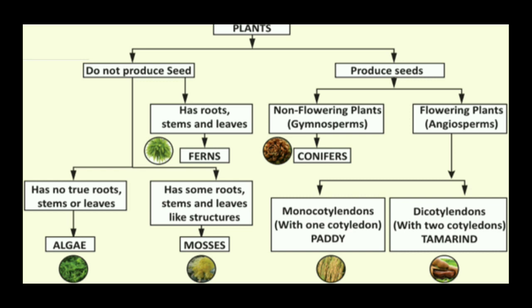The plants which produce seeds are classified into two groups: gymnosperms and angiosperms. Gymnosperms are plants which produce naked seeds and do not produce flowers. Angiosperms are flowering plants where the seeds are enclosed within the fruit. Angiosperms are further classified into two groups based on the number of cotyledons in the seed: monocotyledons and dicotyledons. Monocotyledons have only one cotyledon — example, paddy. Dicotyledons have two cotyledons — example, tamarind.